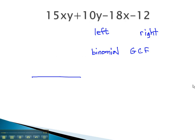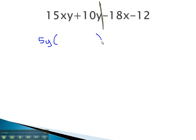For example, considering this problem, if we split the problem down the middle after the second term before the next sign, on the left side we see there's a common factor of 5y. When we factor out the 5y, we're left with 3x plus 2.